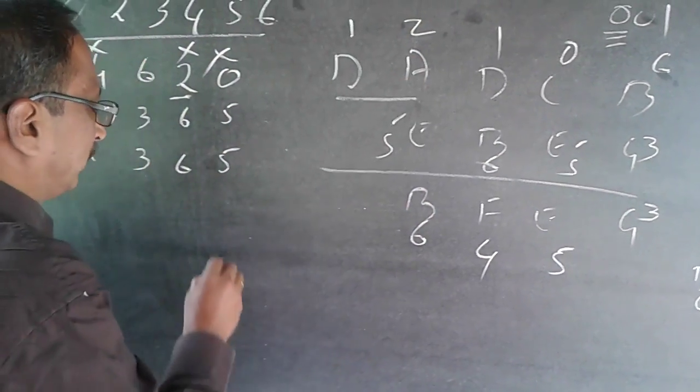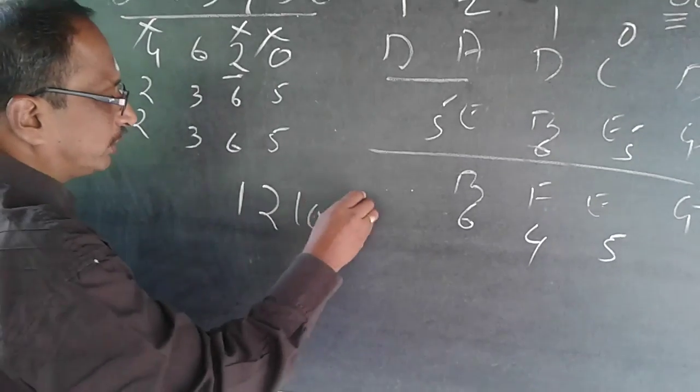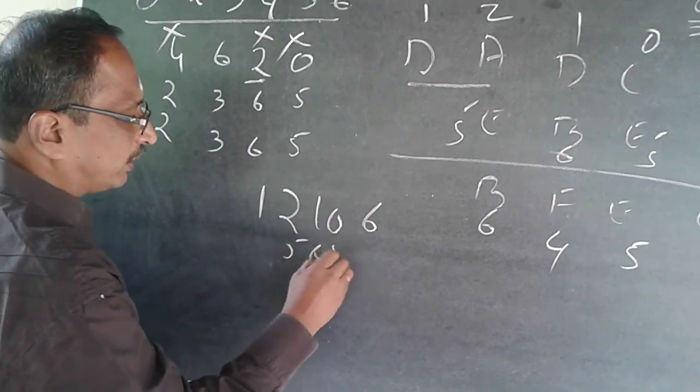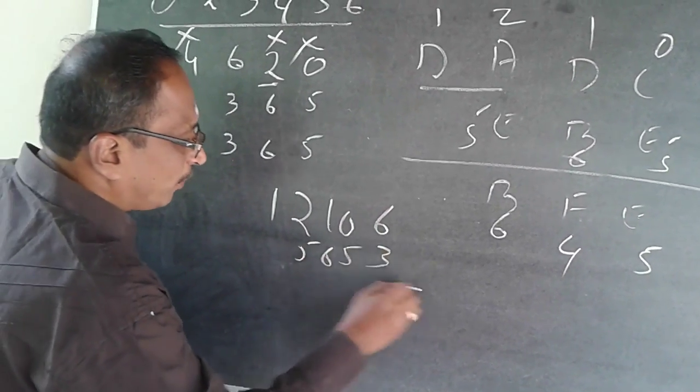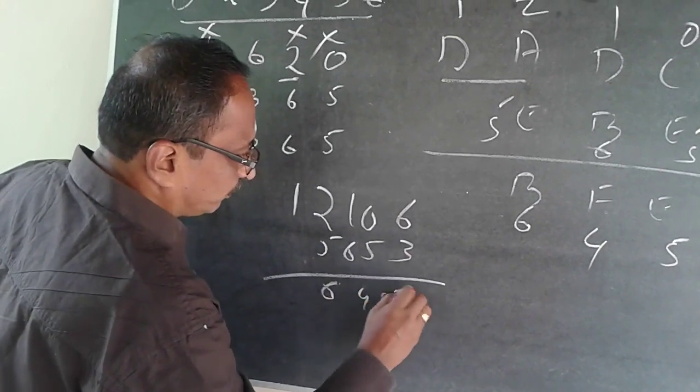So the answer is: the problem 1, 6, 1, 0 — that is BADCD — minus 5, 6, 3 — that is EBG — equals 6, 4, 5, 3 — that is BFEG. So D=1, B=6, A=0, C=2, E=5, G=3, F=4.